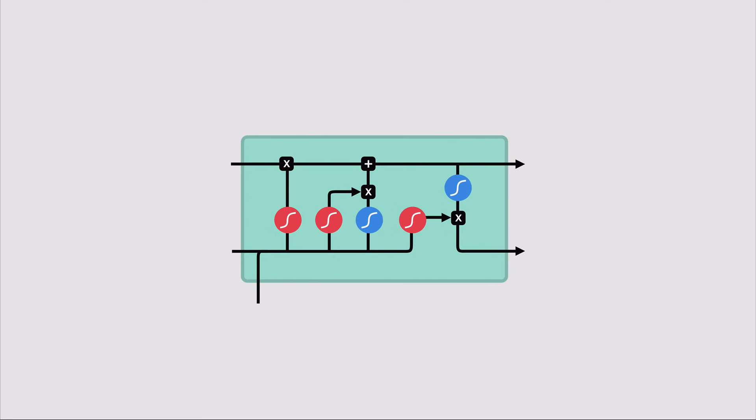The core concepts of LSTMs are the cell state and its various gates. The cell state acts as a transport highway that transfers relative information all the way down to the sequence chain. You can think of it as a memory of the network. Because the cell state can carry information throughout the sequence processing, in theory even information from earlier time steps could be carried all the way to the last time step, thus reducing the effects of short-term memory. As it goes on its journey, information gets added or removed to the cell state via gates. The gates are just different neural networks that decide which information is allowed on the cell state.